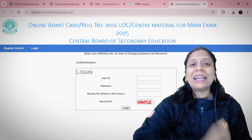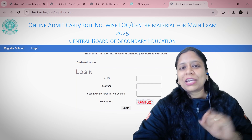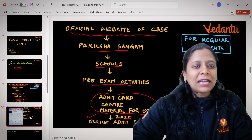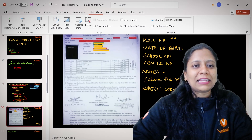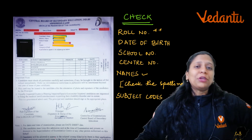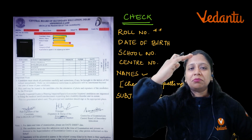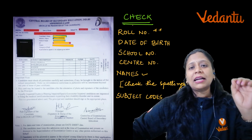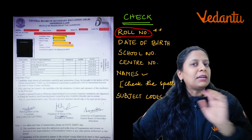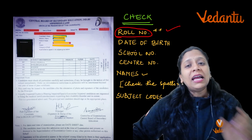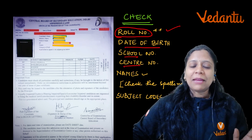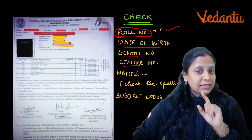Once you receive your admit card, make sure to check the following things carefully. First, check your role number. Then check your date of birth — is it correct? Also verify your school name and center name.